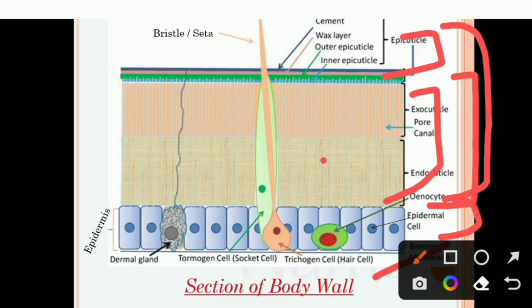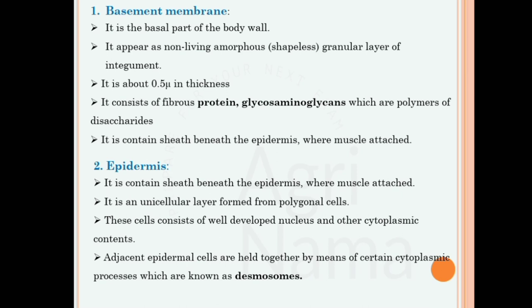The basement membrane is the basal, innermost part of the insect body. It is amorphous — meaning shapeless — with a thickness of 0.5 micron. It consists of fibrous protein and glycosaminoglycans, which is a polymer of disaccharides. It is a sheath beneath the epidermis where muscles are attached.